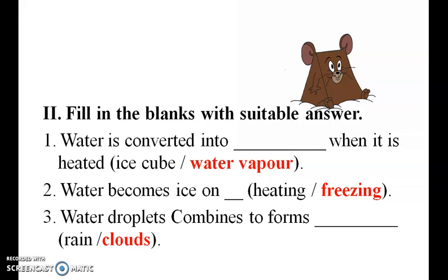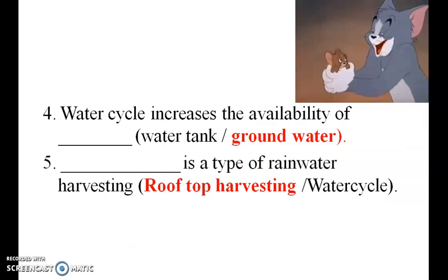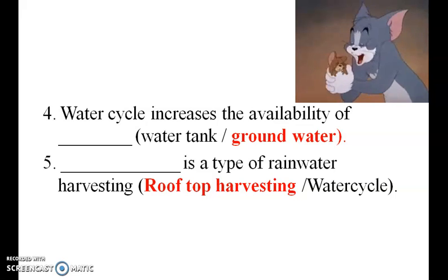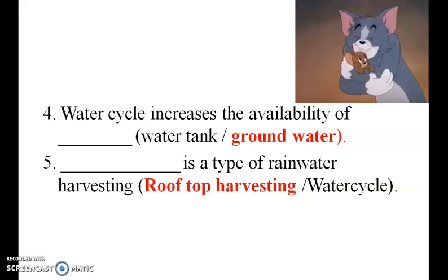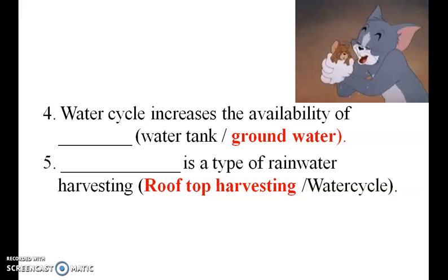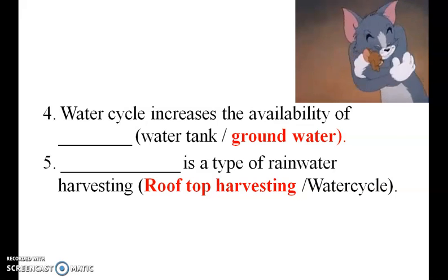Water droplets combine to form clouds. Water cycle increases the availability of groundwater. Rooftop harvesting is a type of rainwater harvesting.